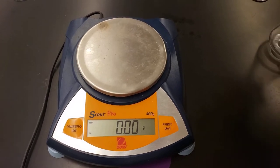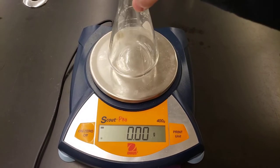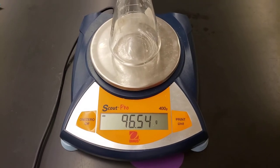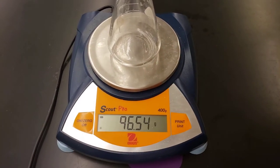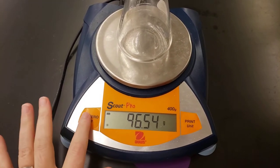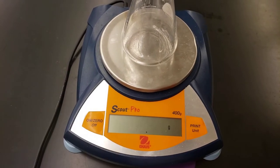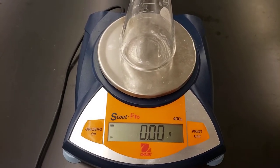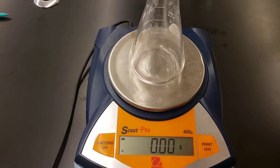Up first we are going to put an Erlenmeyer flask on our balance. The mass goes up but since we're not interested in the mass of the balance we are going to press our zero button to get it to read zero even though the Erlenmeyer flask is still on it.